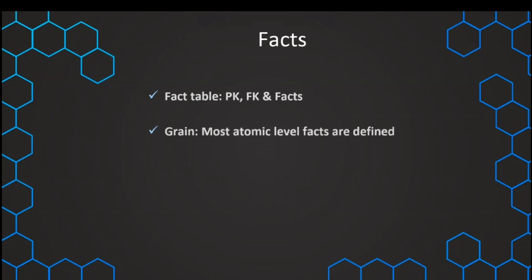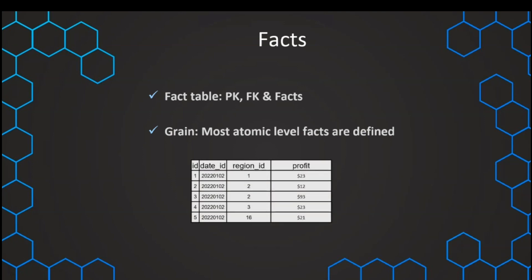Our fact table is defined by the so-called grain, and the grain means the most atomic level of a fact. For example, if we have the following fact table, we see that we have the profit for every single region and every single day. For every single date and every single region, we have one row defined. We have the profit in one row for one specific region at one specific date. And this is then the most atomic level, and this is then the grain of our fact table.